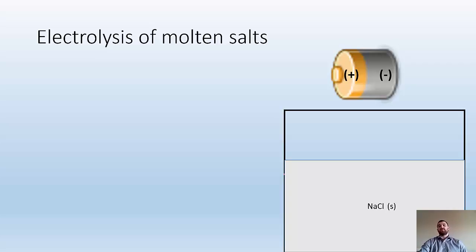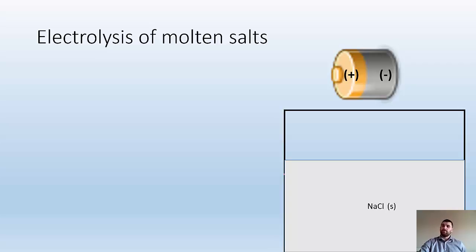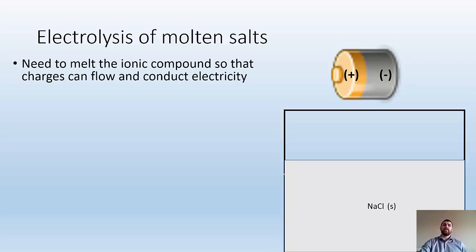Electrolysis of molten salts. Let's say I had some sodium chloride and I want to split it up into sodium metal and chlorine gas. Sodium metal is highly reactive, explosive in the presence of water; chlorine gas will kill you. But you react them together, you get sodium chloride, and you sprinkle it on your food. If we wanted to get the sodium and chlorine back, we need to melt the ionic compound so that the charges can flow and conduct electricity. Right now the sodium chloride is a solid — charges are locked into place and won't conduct. But if you melt it, they will.